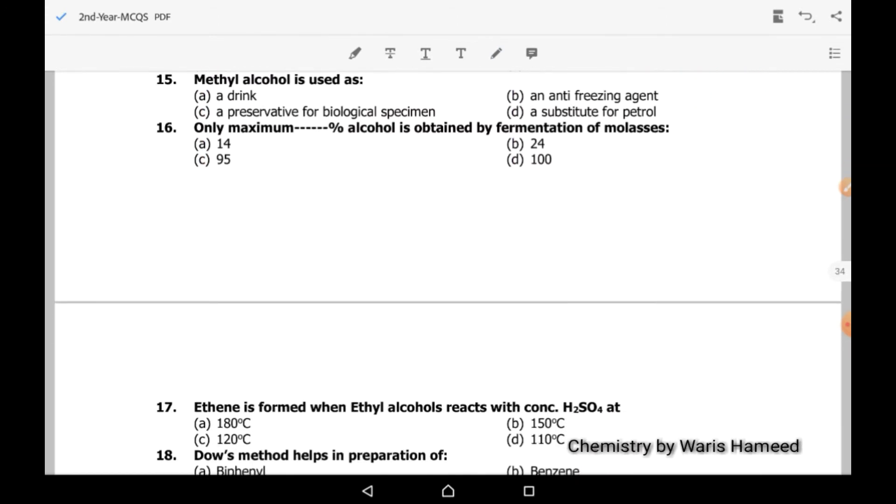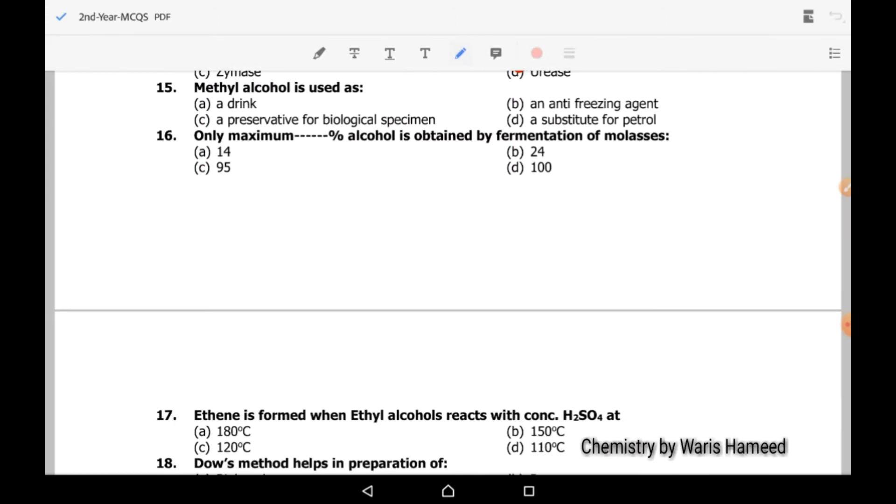Methyl alcohol is used as anti-freezing agent. Only maximum 14% alcohol is obtained by fermentation of molasses. Ethene is formed when ethyl alcohol reacts with concentrated sulfuric acid at 180 degrees Celsius. At 180 degrees Celsius, we can form ethene. And if temperature is low, then there will be the formation of ether.